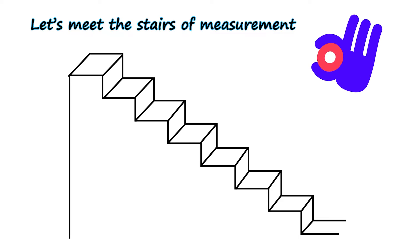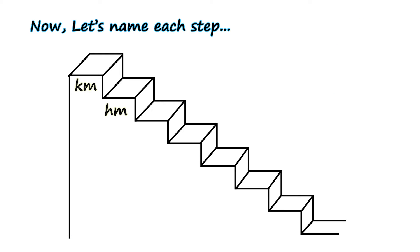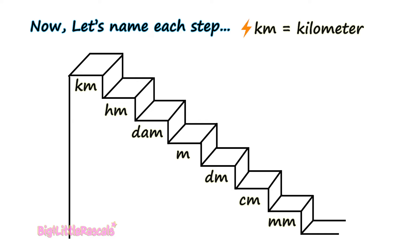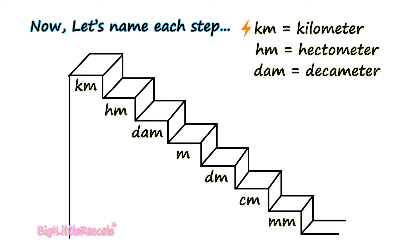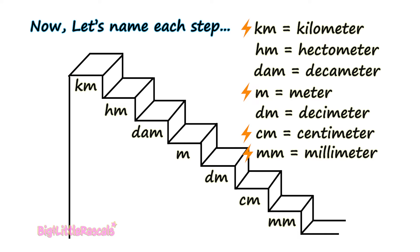First, let's visit our stairs of measurement to help us convert units. There are seven steps on these stairs. From top to bottom: km (kilometer), hm (hectometer), dam (decameter), m (meter), dm (decimeter), cm (centimeter), and mm (millimeter).